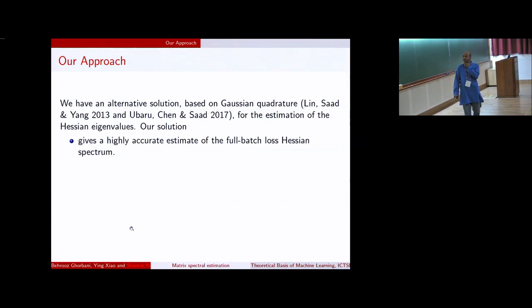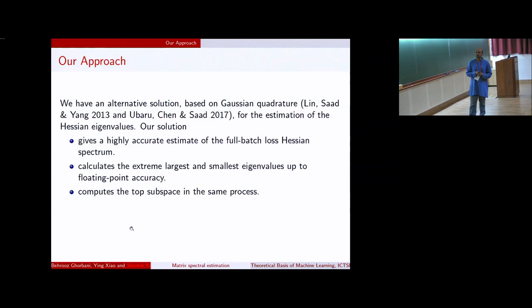We propose an alternative solution which is based on Gaussian quadrature for the estimation of the eigenvalues. We actually provide a highly accurate estimate of the full batch loss Hessian spectrum. One thing before I start. What I'm going to be talking about today is I'm not taking an unbiased estimate of the Hessian. I'm actually looking at the full Hessian. And I'll come back to that because that is an issue as a weakness of our approach. But I'll tell you why we had to make that choice.